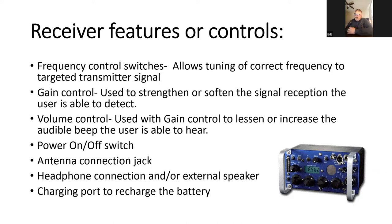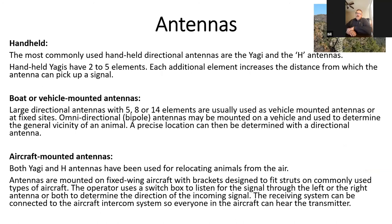Other key receiver features include the power switch, the antenna connection port, a headphone jack or external speaker for audible output, and a recharging port for the internal battery — so you can recharge the unit before heading into the field.